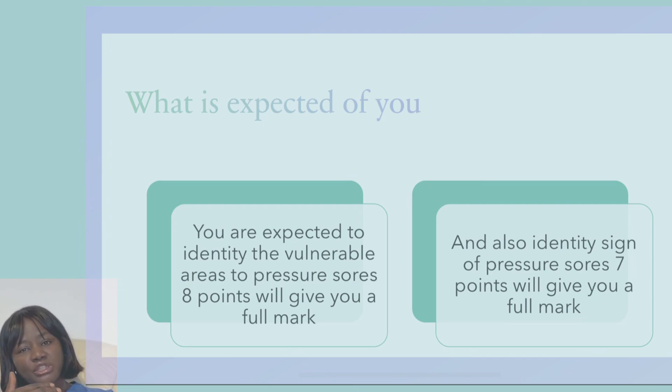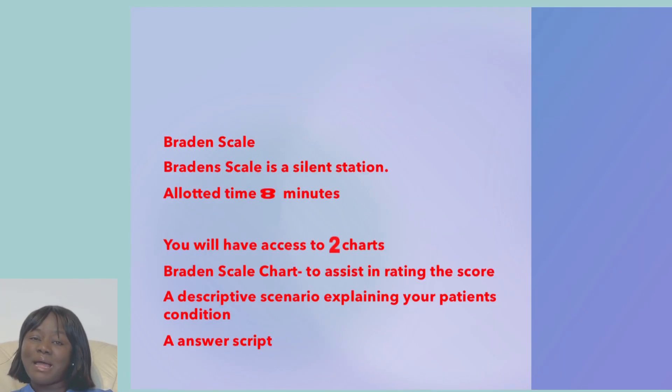You are expected to score each of the categories, do a total sum of your sub-scores, and give the necessary intervention. You are going to make use of a standard tool to carry out this task, and that brings us to the Braden Scale assessment.